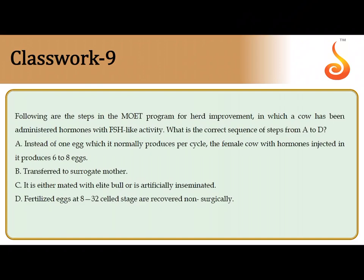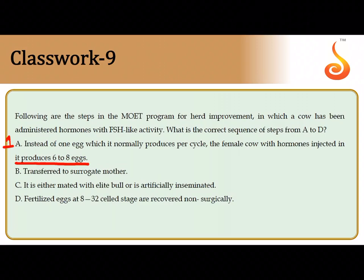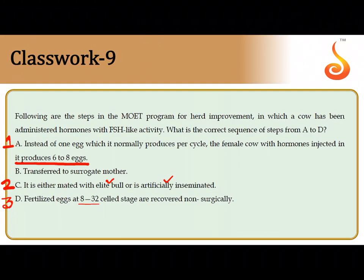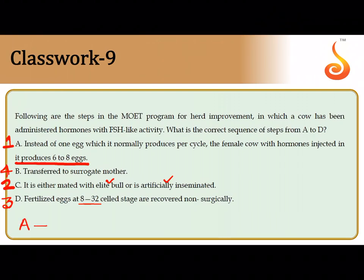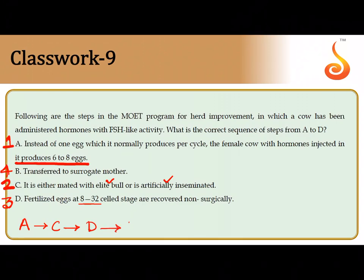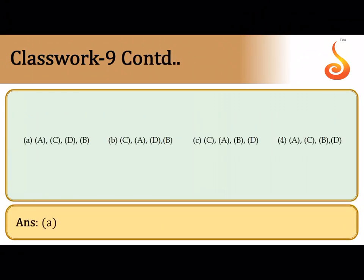The ninth question lists the steps of the MOET program. The first step is stimulating multiple ovulation by injecting the cow with a hormone having FSH-like activity, causing it to produce six to eight eggs. The second step is mating with an elite bull or artificial insemination. The third step is allowing the fertilized eggs to develop to the 8-to-32 cell stage, then scooping the embryos out non-surgically. The last step is transferring them into surrogate mothers. The correct sequence is A, C, D, B — which is option one.